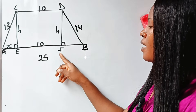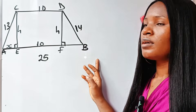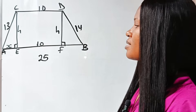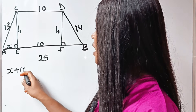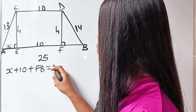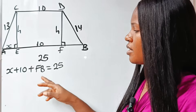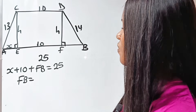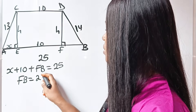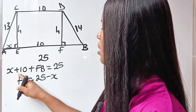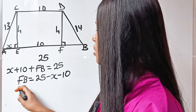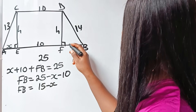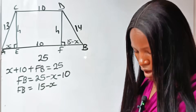Now we need to get FB. We are already told that AB is 25. So X plus 10 plus FB should give us 25. Solving for FB: FB is 25 minus 10 minus X, which gives us FB = 15 minus X.